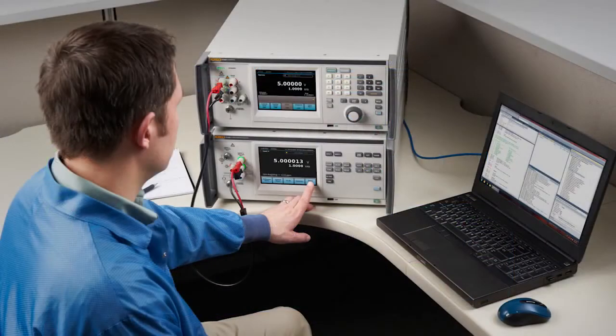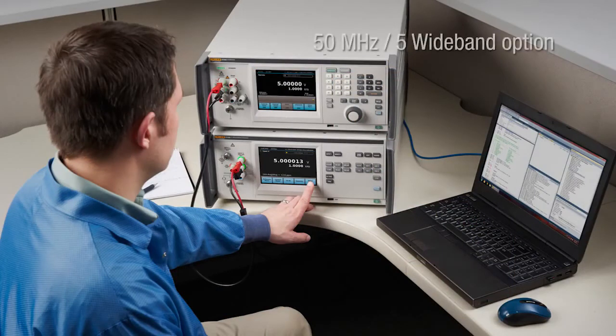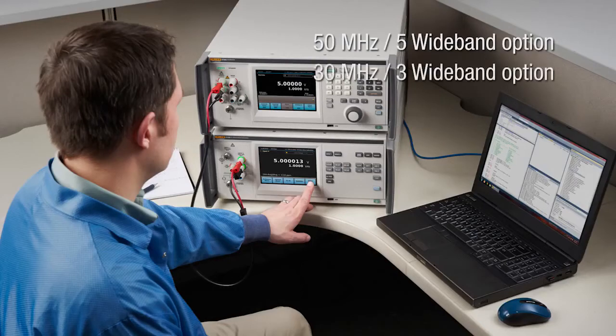The fourth major improvement is the addition of the 50MHz wideband option that extends the bandwidth to 10Hz to 50MHz for calibrating precise RF power sources. Like the 5790A, the 5790B still offers a 30MHz wideband option ranging from 2.2mV to 7V and with a frequency range of 10Hz to 30MHz.